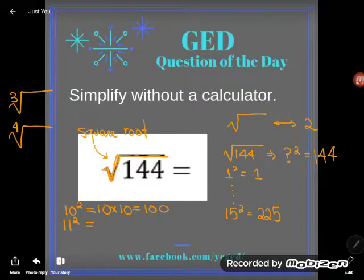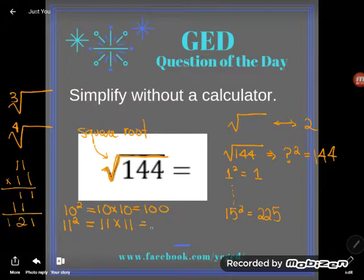11 squared, because I was looking for 144. 11 squared is the same as 11 times 11. If you don't know what 11 times 11 is, you can come over here, multiply it out, and you'll see that it's equal to 121. I'm still too small. Do you see where I'm going with this?